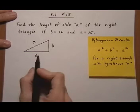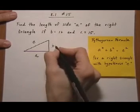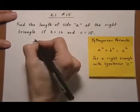So let's go ahead and write in what we know. We don't know A, we know that B is 12, and we know that C is 15.